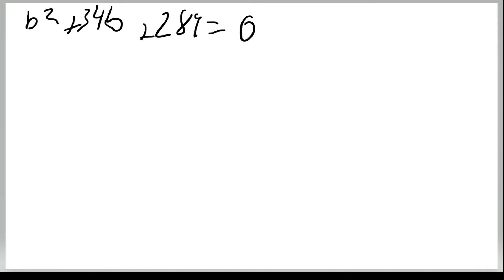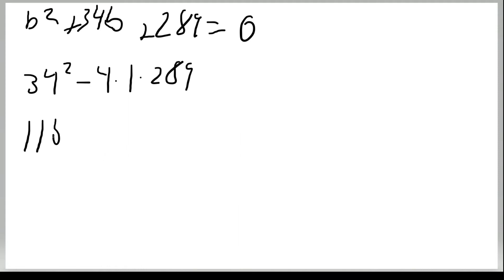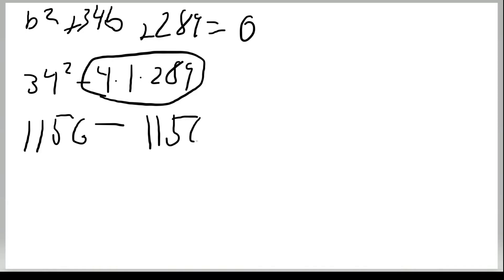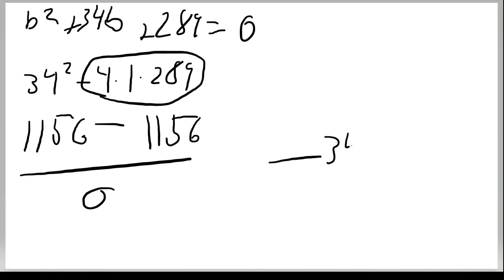34 squared equals 1156, and 4 times 1 times 289 also equals 1156, so the discriminant equals zero. That means there is one real solution: negative 34 plus or minus the square root of zero, over 2.